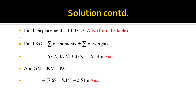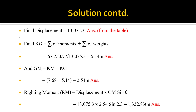Now we solve for RM. The righting moment equals displacement × GM × sine of theta. Substituting values: 13,075.3 × 2.54 × sine of 2.3 degrees. The resulting righting moment is equal to 1,332.83 ton-metres.